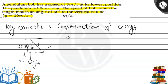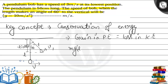According to conservation of energy, the gain in potential energy equals the loss in kinetic energy. The gain in potential energy becomes mg times (L minus L cos θ), because this is the height gained by the pendulum at this position. This equals the loss in kinetic energy, which is one-half m V squared minus one-half m V1 squared.